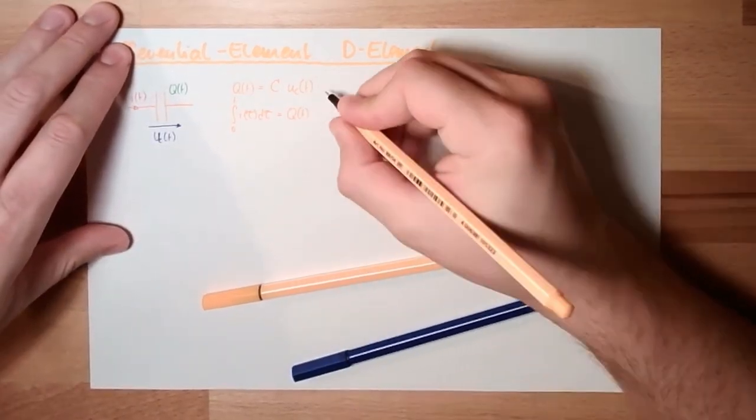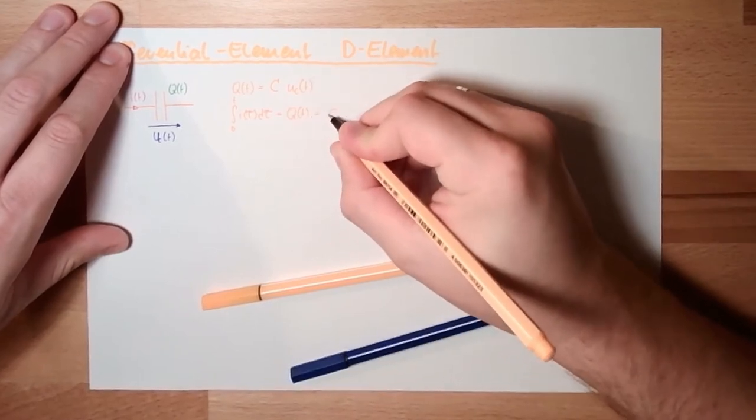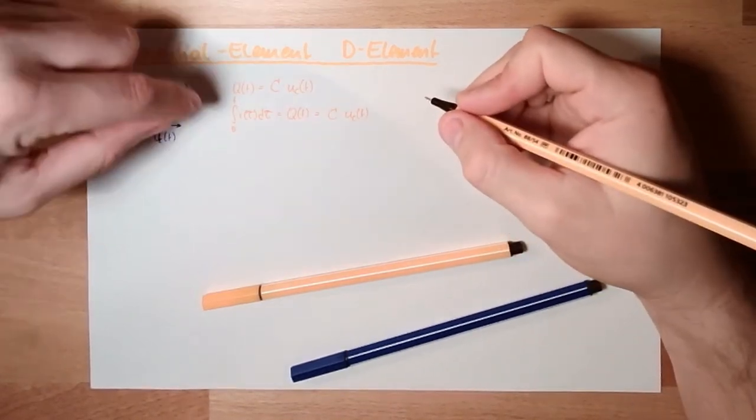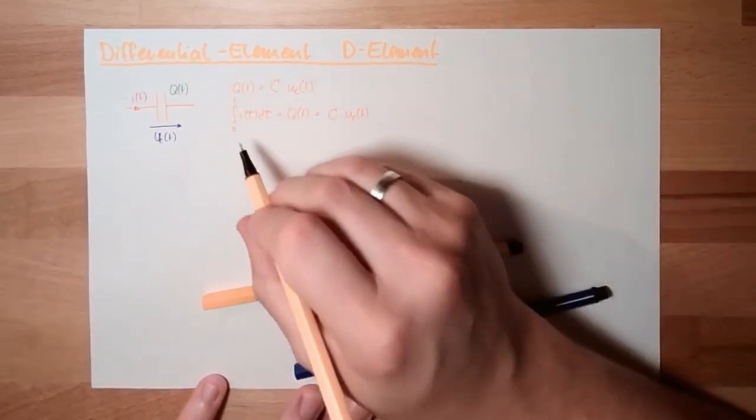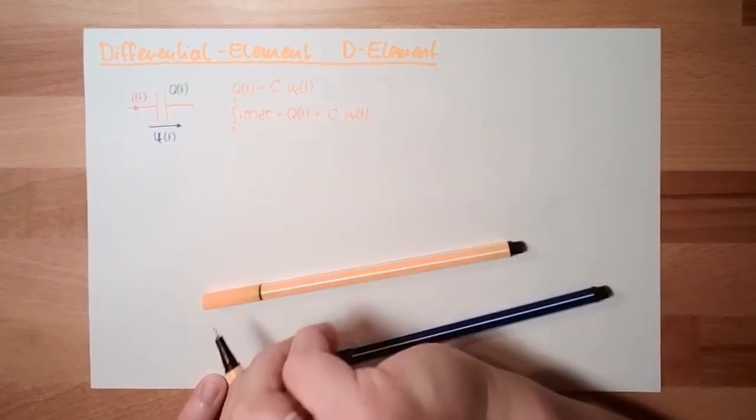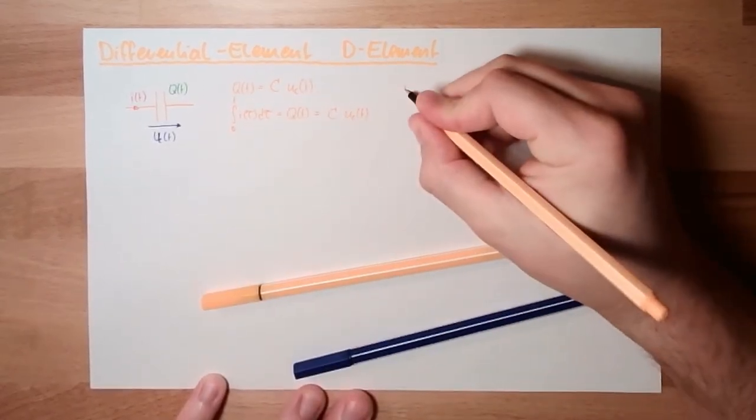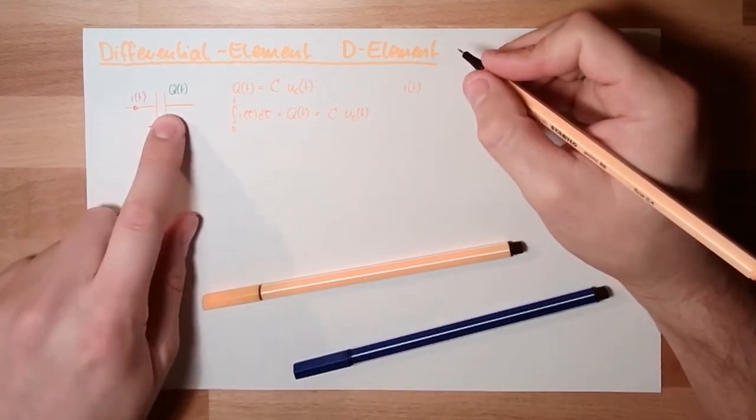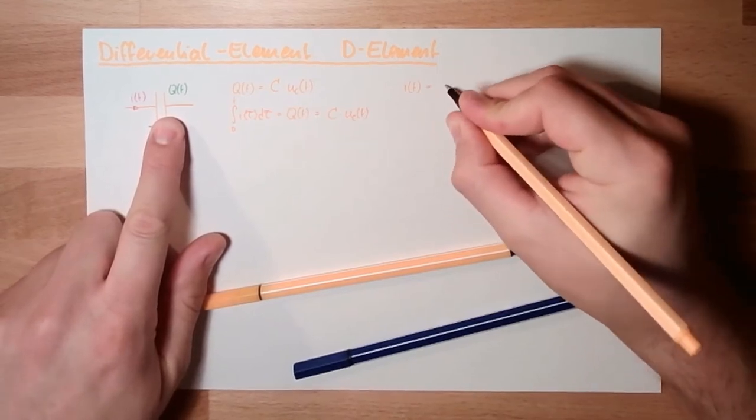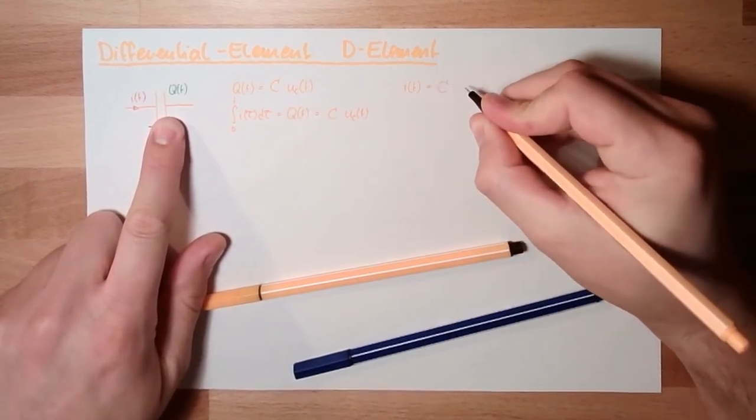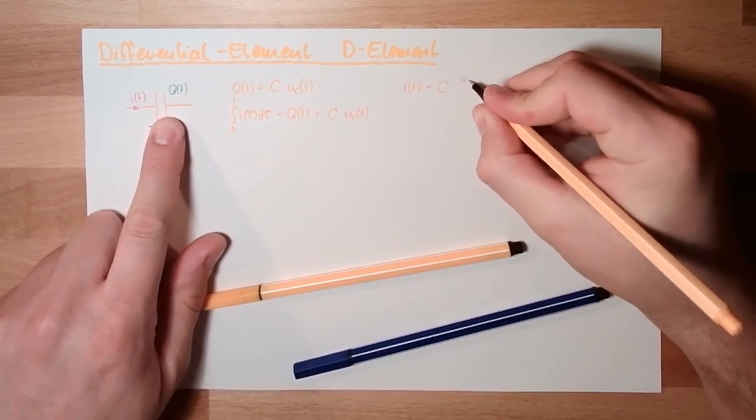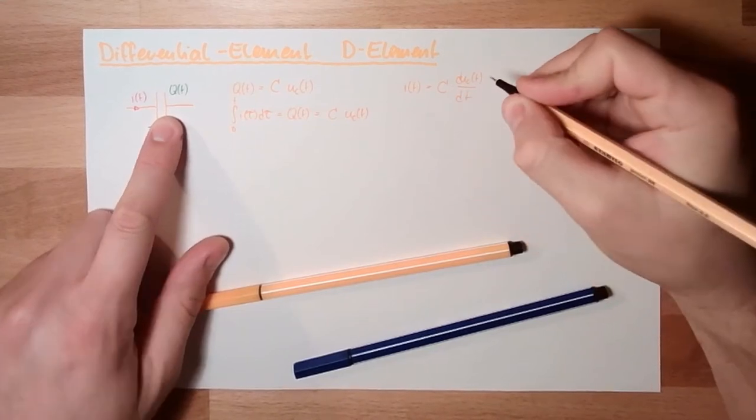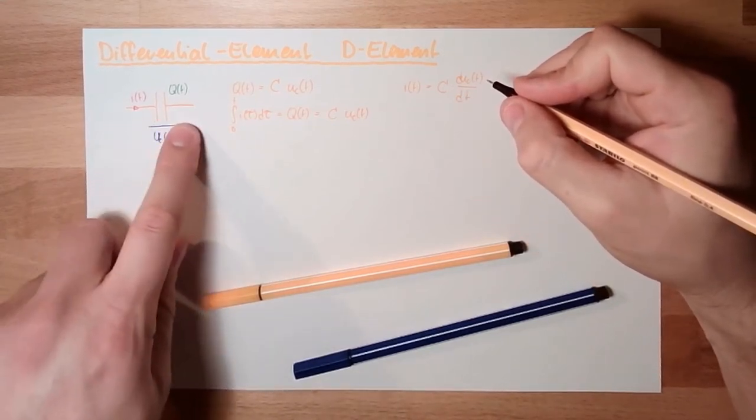So this means, if I am using this, this is C multiplied by UC from T. And now to get rid of this integration here, I will differentiate this. So the current which is running through the capacitor is the capacity multiplied by the change rate of the voltage.